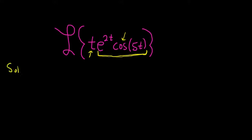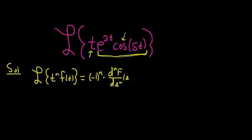So solution. Recall that if you have the Laplace transform of t to a power times f of t and you can compute the Laplace of little f, like if you know how to do it, then this is a useful formula because this is equal to negative 1 to the n times the nth derivative of big F with respect to S. Where big F is the Laplace of little f. So in our problem, this is going to be our little f.